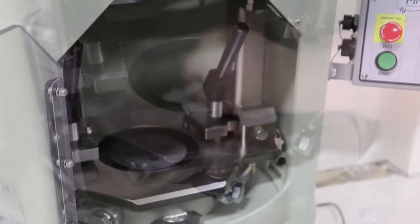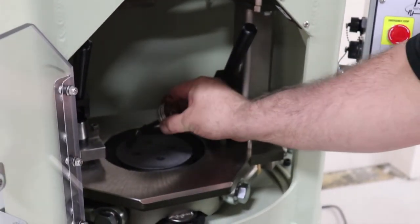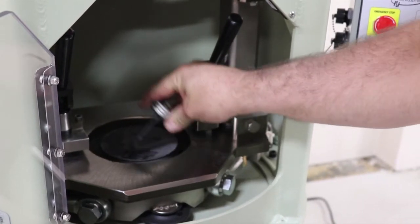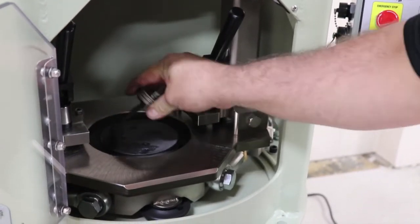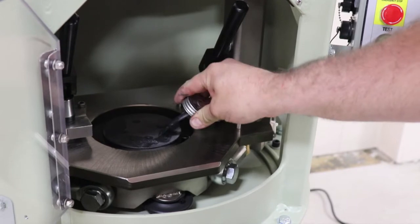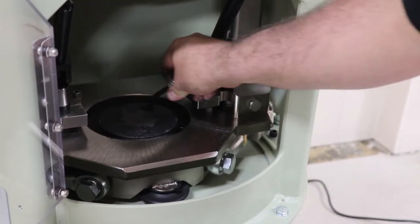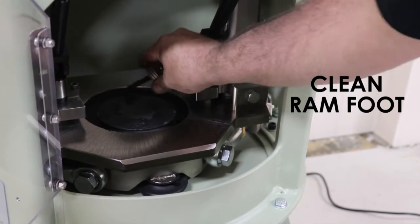Then apply a fresh coat of anti-seize to the ram foot top surface on the outside of the four cap screws. It is not necessary to lubricate the center of the ram foot surface, only around the four cap screws on the outside of the ram foot. The ram foot should be cleaned and greased daily.